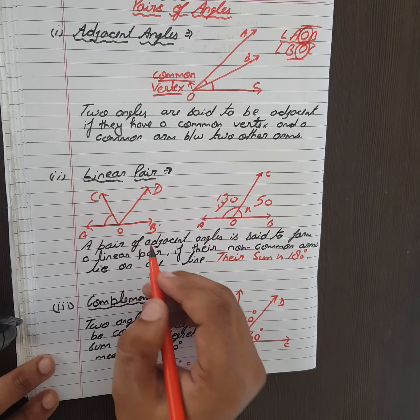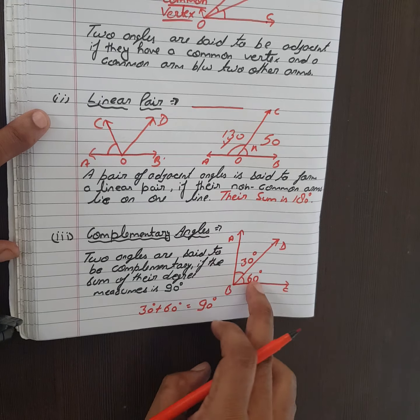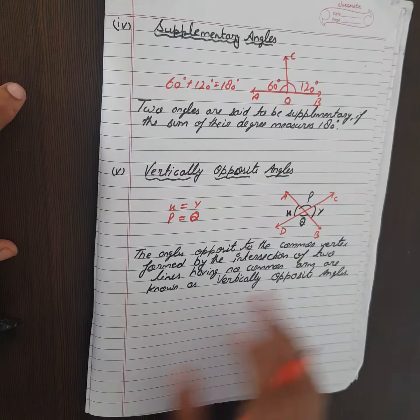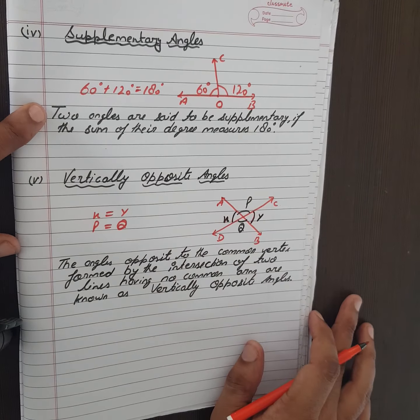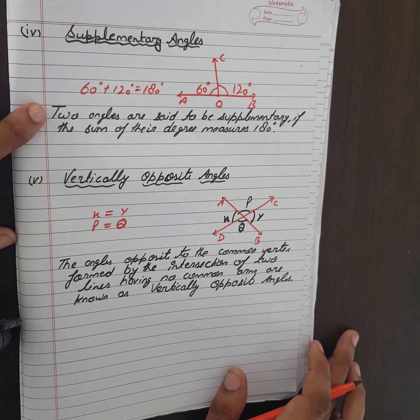When we write these names, angle AOB is the first angle and the second one is angle BOC. While observing, you see that O is common here as well as here, so these angles are said to be adjacent angles.